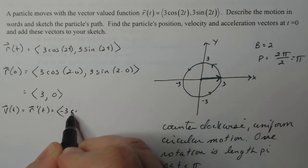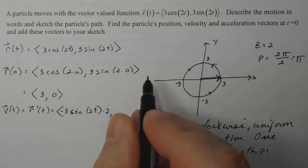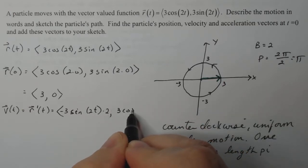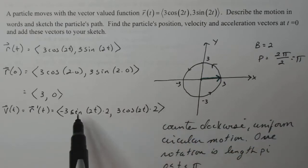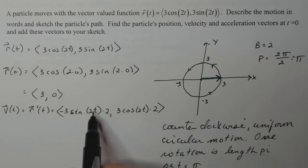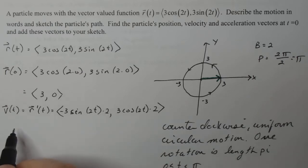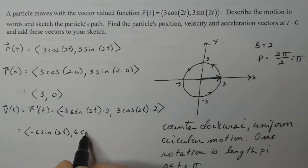So this is going to be negative three sine of two t times two comma three cosine of two t times two. You should probably ask yourself where these extra twos come from. That's the chain rule. I take the derivative of the inside. So if I simplify this: minus six sine two t comma six cosine two t.